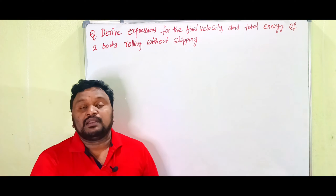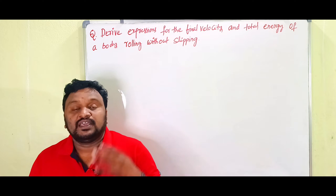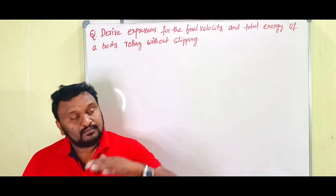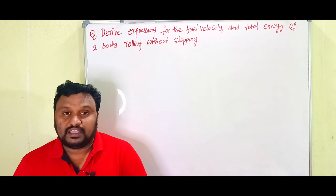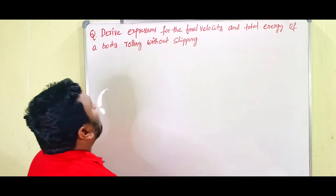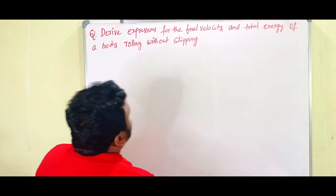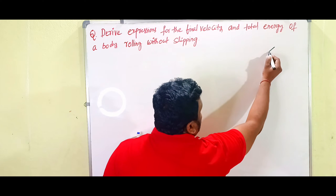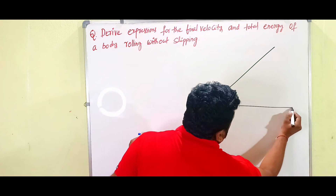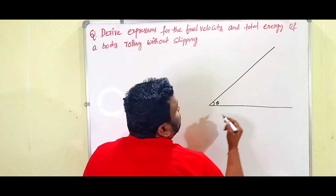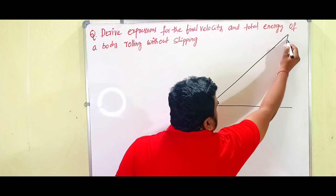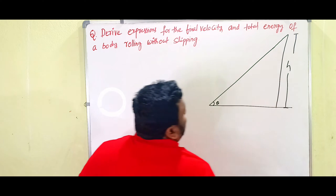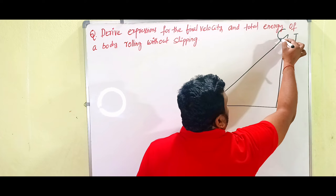When a body is rolling on the inclined plane without any slipping, we have to find out the energy of the body and the velocity on reaching the ground from the plane. The question is: derive expressions for the final velocity and total energy of a body rolling without slipping. This is an inclined plane making some angle with the horizontal at a height H, and here there is a ball or any body.